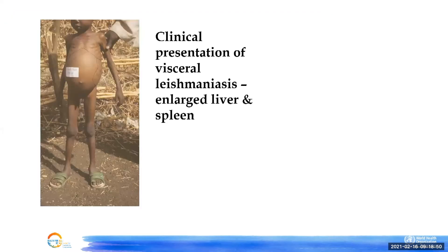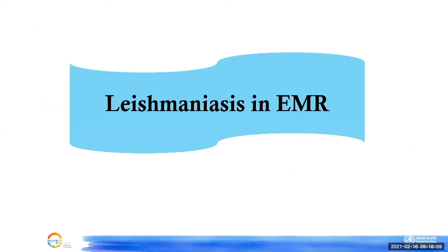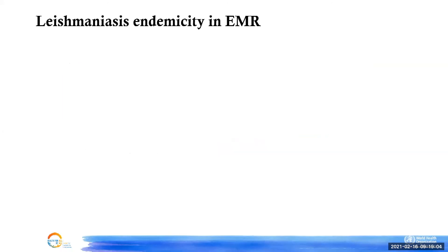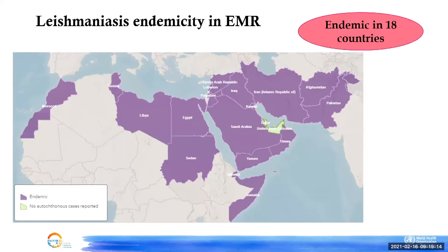This is a clinical presentation of visceral leishmaniasis with enlarged spleen and liver. Looking at the situation of Leishmaniasis in the WHO Eastern Mediterranean region: there are 22 countries in our region, and Leishmaniasis is a major public health problem, endemic in 18 of them.